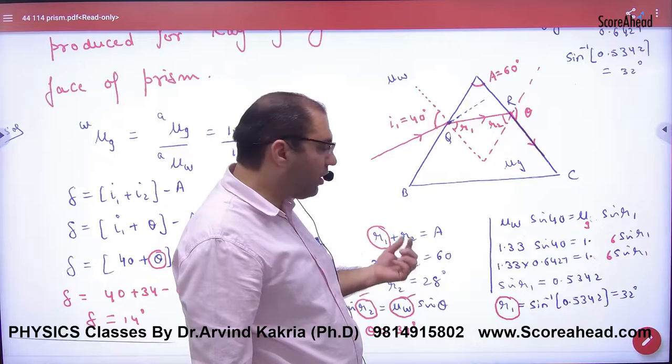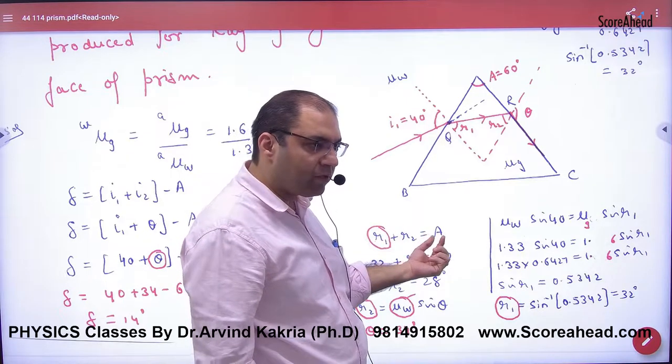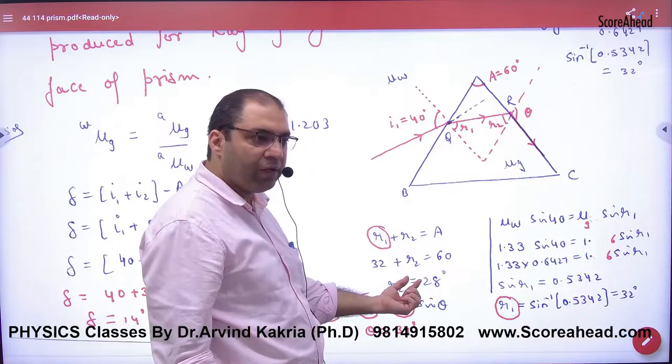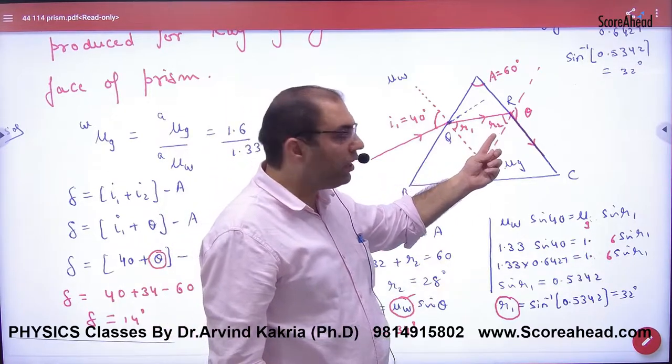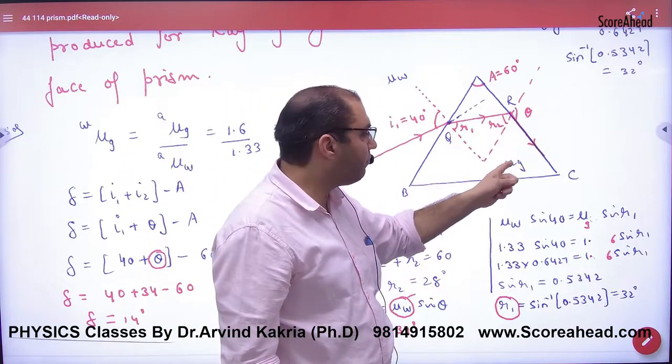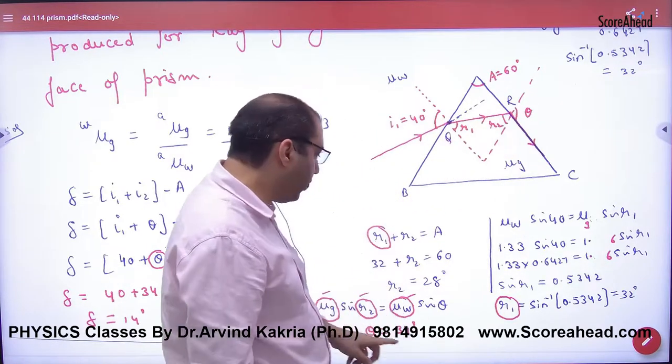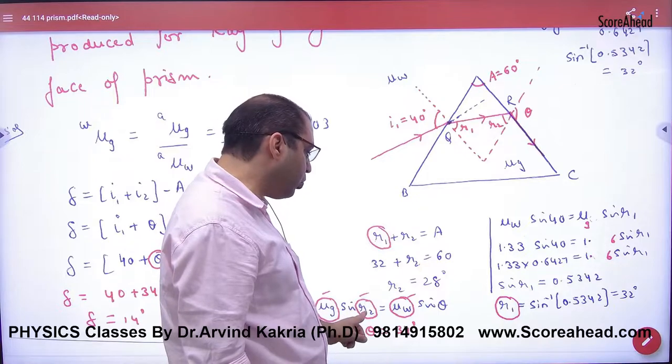R₁ and R₂, what do we want to take out? Apply Snell's law for R₁. Then solve for R₂. Then here we will take out μ glass into sin of R₂ equals μ water into sin of theta. So now you know R₂, μ water here.